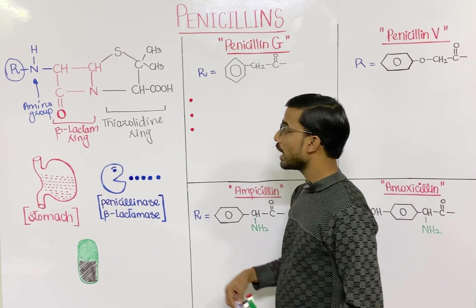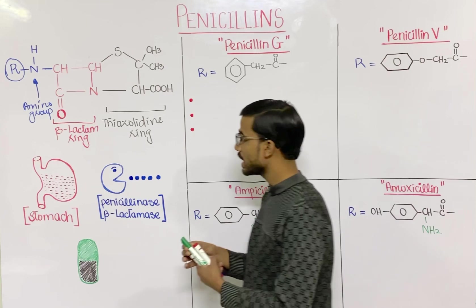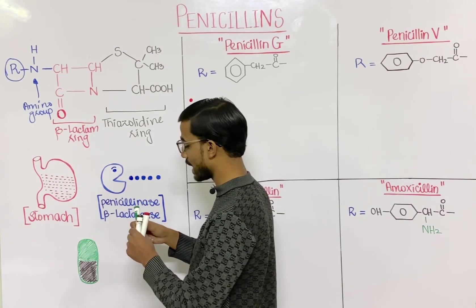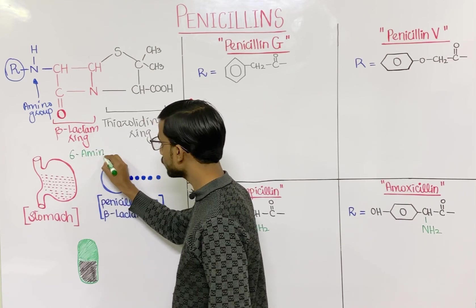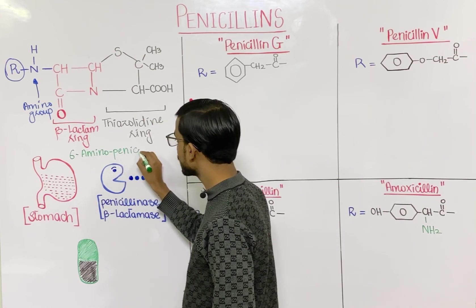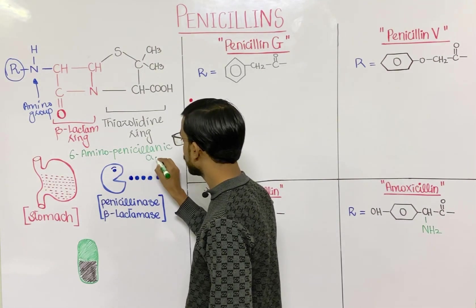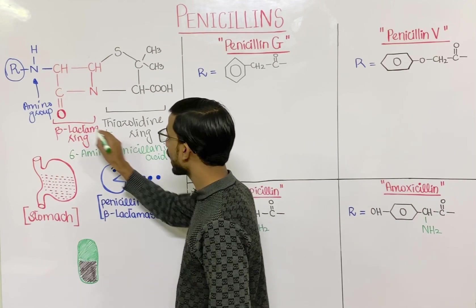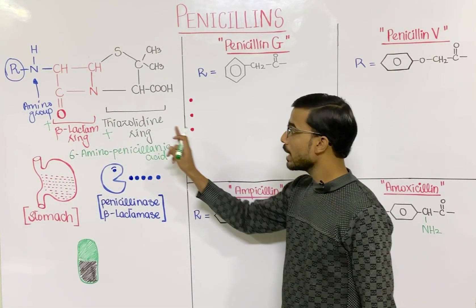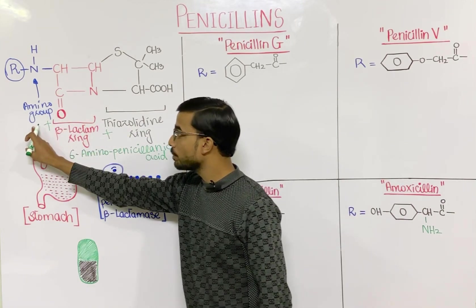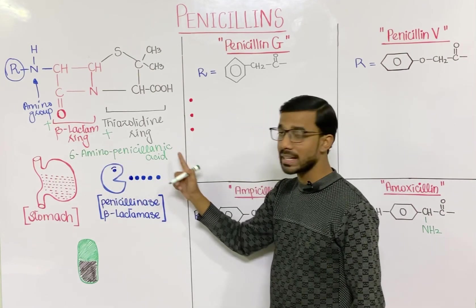We call thiazolidine, beta-lactam ring, and amino group collectively as 6-aminopenicillanic acid. That is the most important thing — if we collectively refer to the thiazolidine ring, beta-lactam ring, and amino group, we call it 6-aminopenicillanic acid.